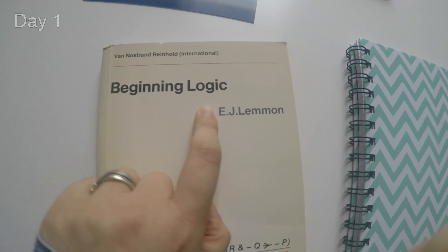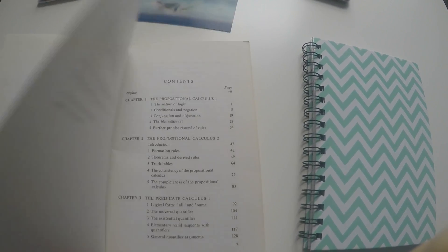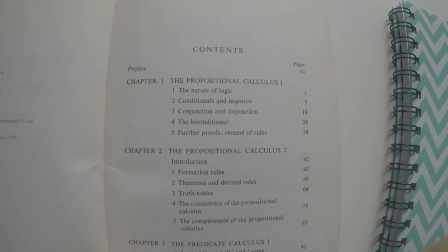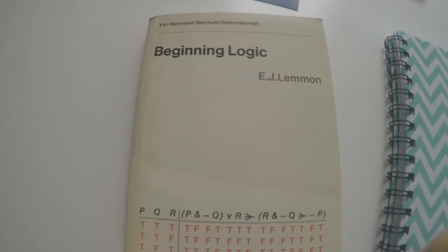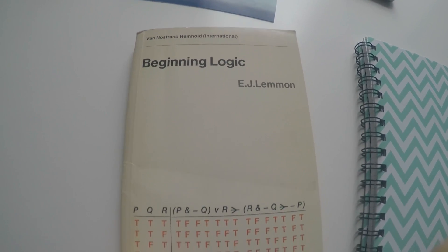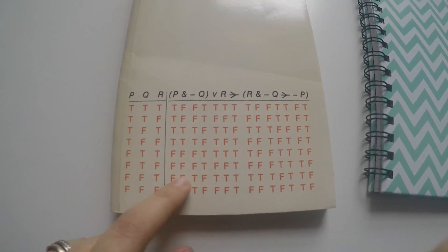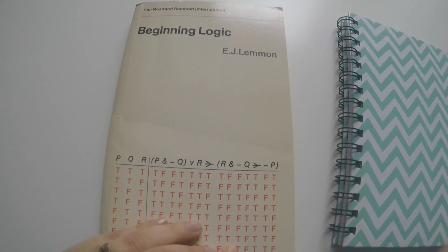I've decided to start with 'Beginning of Logic' by EJ Lemon — hopefully I pronounced that right. I haven't done logic since high school and I don't think I've done any at university. I thought this would be quite interesting because for me, logic is like the basic part of math. I used to love these tables in school, they were actually fun, but I don't remember all the signs. Very excited for this.